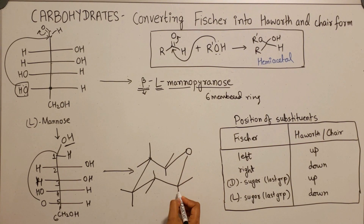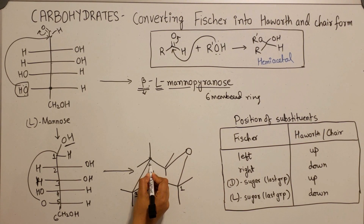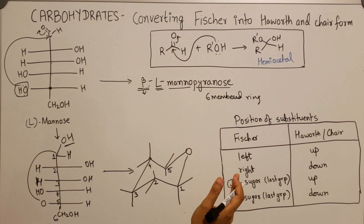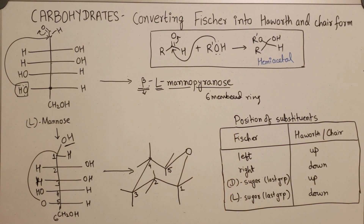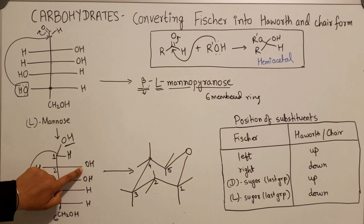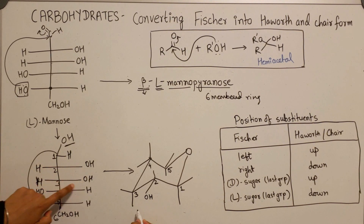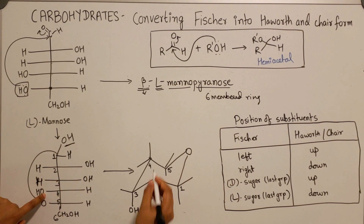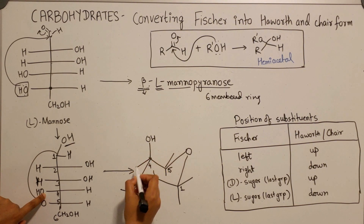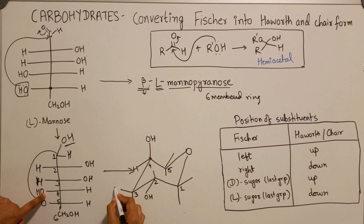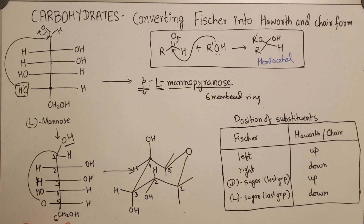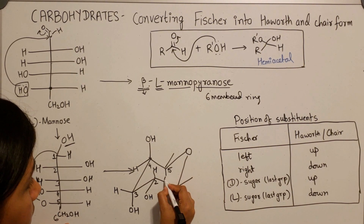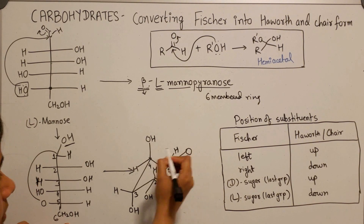Label the atoms clockwise: one, two, three, four, five. We follow the same rule given in the table. Carbon two — OH on the right means it goes down in the chair form. Carbon three — OH on the right, so it goes down. Carbon four — OH is on the left, so it goes up. Because it is an L sugar, the CH2OH group goes down.